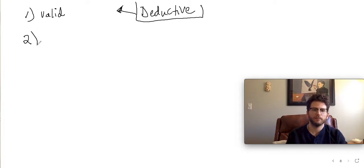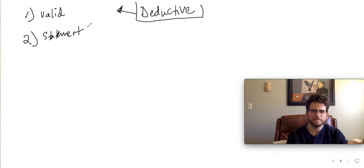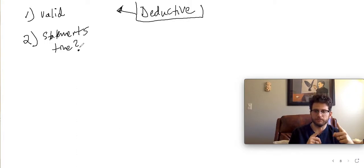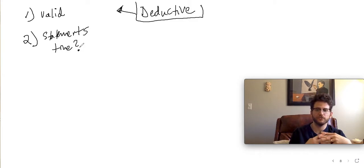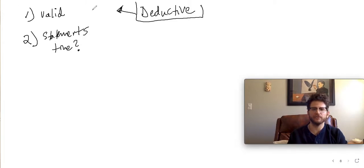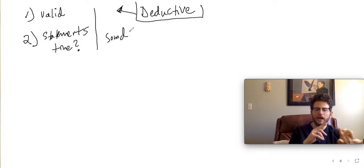The second point we look for is: are those statements true? If both of these things are true — if the argument is valid and the statements are true — then we would say that a deductive argument is sound. It's got true statements and the statements are organized in the right way.